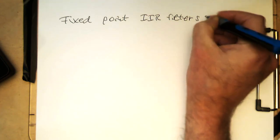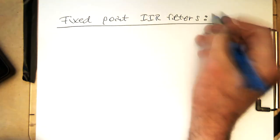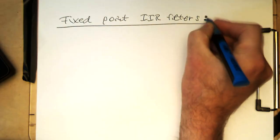They're very useful, for example, on microcontrollers, or if you have very high sampling rate and floating point would be just too slow.